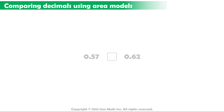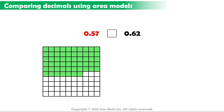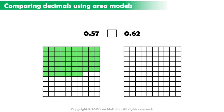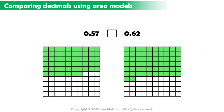As another example, let us compare the two decimal numbers, fifty-seven hundredths and sixty-two hundredths. Here is the area model that represents fifty-seven hundredths, and this one represents the number sixty-two hundredths. Which one has more shaded parts? Notice that the one representing fifty-seven hundredths has less shaded parts. So, we can use the less than sign, and read it as fifty-seven hundredths is less than sixty-two hundredths.